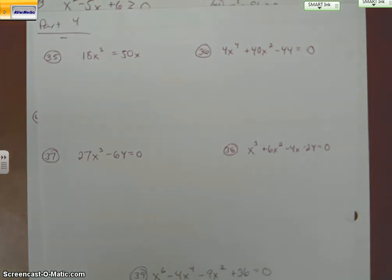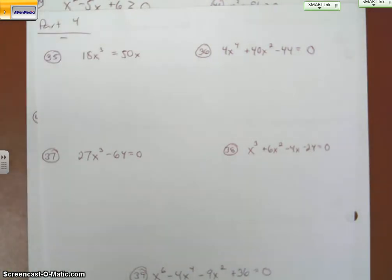Okay, part four is the zero product property. The steps that you need to take for these are to set equal to zero and then factor.